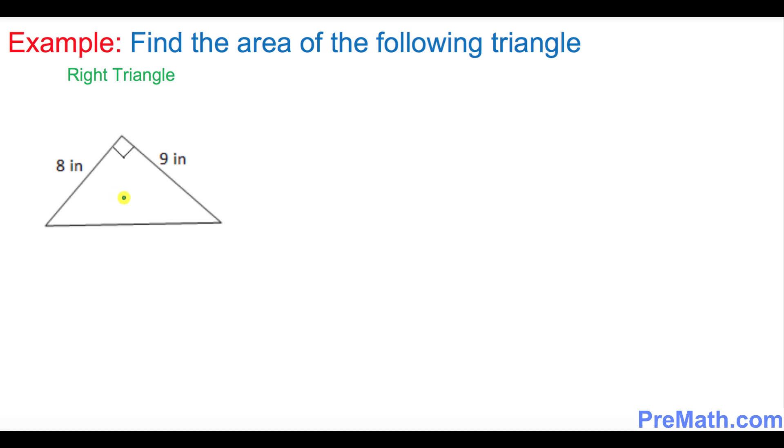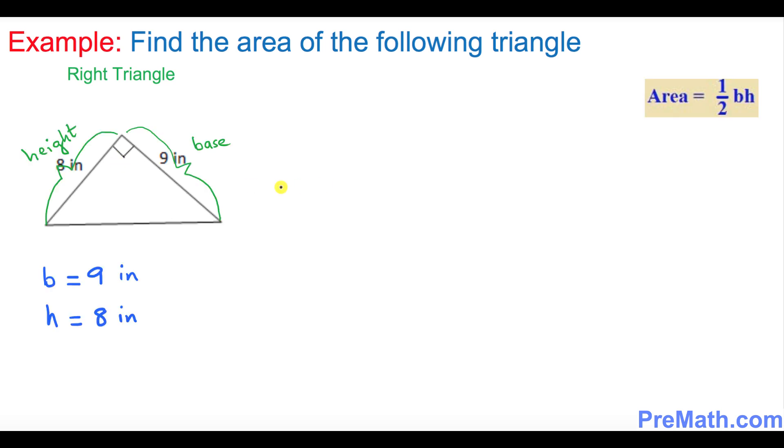Let's look at this first example. We want to find the area of this right triangle. These two sides make a 90-degree angle and are perpendicular to each other, so you can call either one of these sides as a base. I call this one base and this is height. Our base is 9 inches and height is 8 inches.